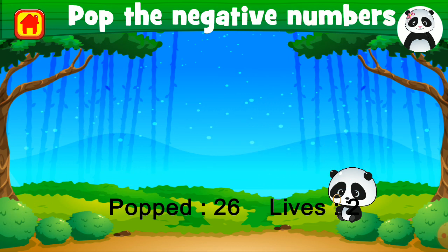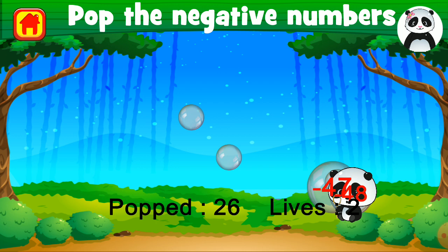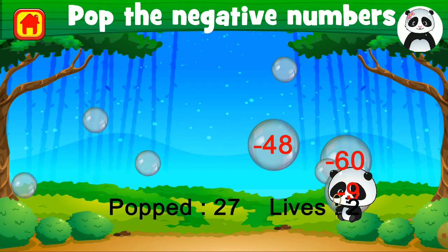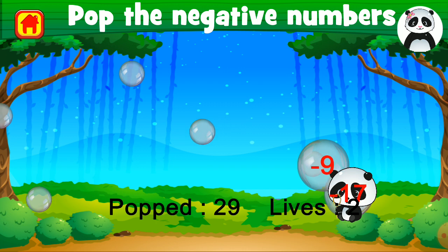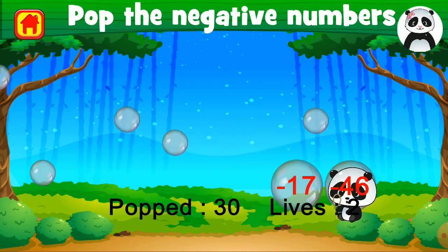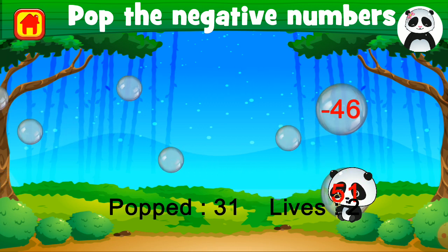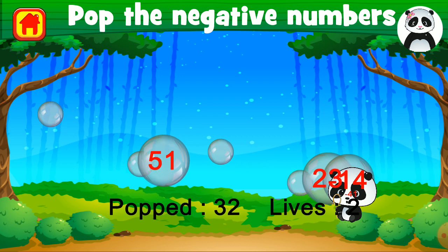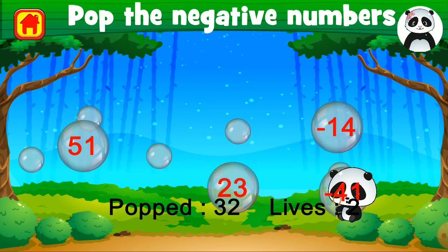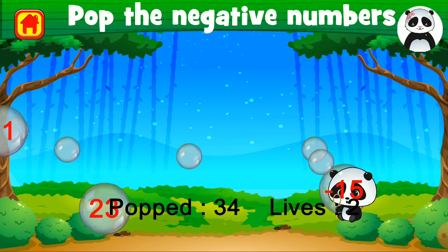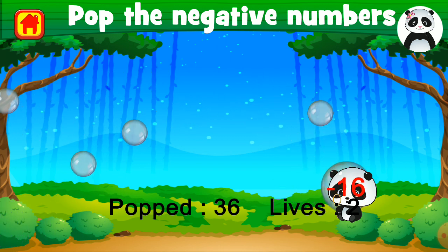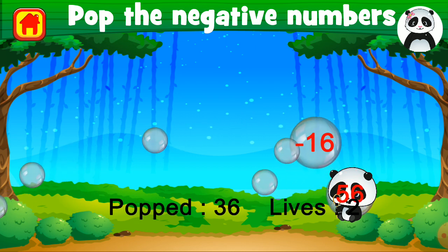Pop the bubble with a negative number. Minus 47 is a negative number — brilliant. Minus 48 is also negative — terrific. Minus 60 is negative — brilliant. Minus 9 is negative — awesome. Minus 17 is negative — excellent. Minus 46 is negative — brilliant. But 51 is positive. 23 is positive. Minus 14 is negative — excellent. Minus 41 is negative — excellent. Minus 15 is negative. Minus 43 is negative — brilliant. Minus 16 is negative — well done.